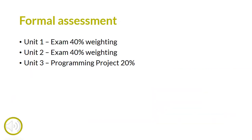For the formal assessment that takes place at the end of year 2, there are two formal examinations and one project which is sent off to be externally moderated. Each exam is worth 140 marks, lasts for two and a half hours, is a written paper, and has an equal weighting of 40% of the A level grade. The programming project is worth a total of 70 marks, is non-examined, but is marked by the A level team and then sent off to be externally moderated by OCR.